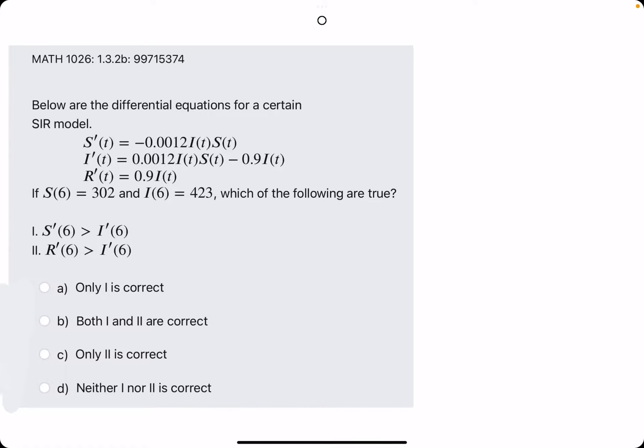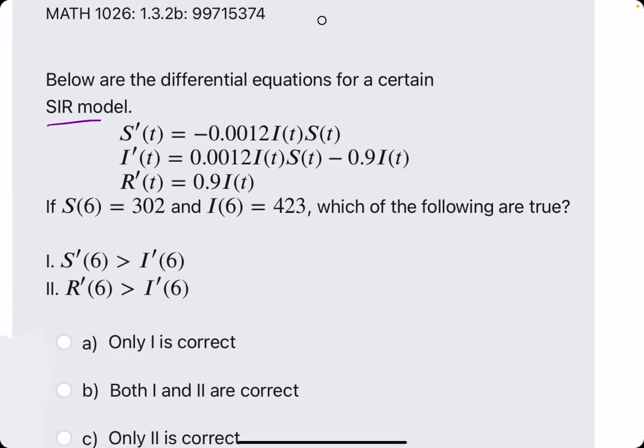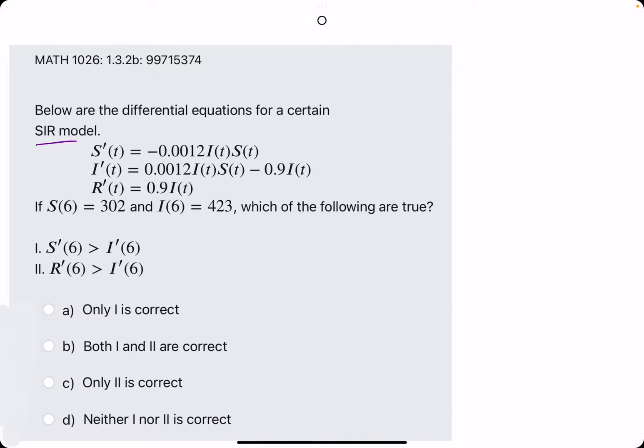Okie dokie. In this problem, we are given the differential equations for the SIR model, and so we have S prime, I prime, and R prime representing the rates of change of S, I, and R respectively.